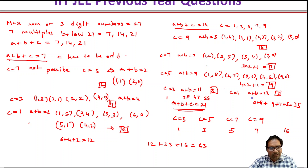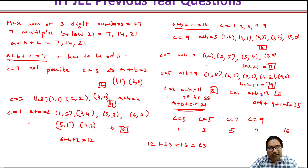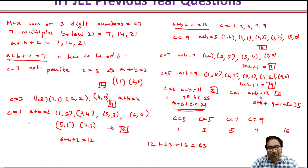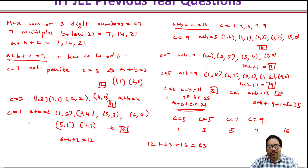When c equals 1, a plus b should equal 13. That means: (4,9), (9,4), (5,8), (8,5), (6,7), (7,6) — so 6 options. Total when a plus b plus c equals 14: 6 plus 8 plus 9 plus 7 plus 5, which equals 35.